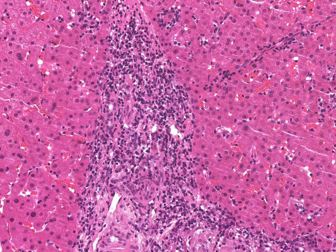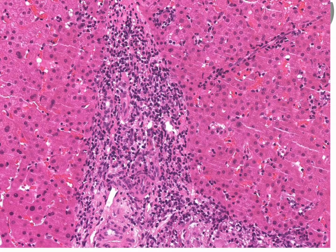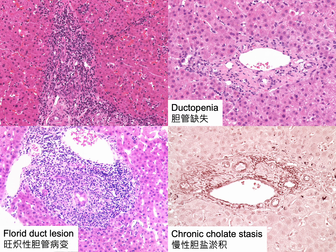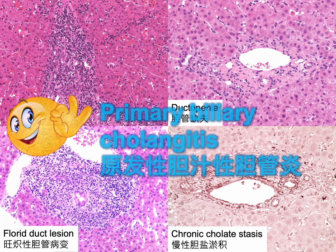In this example, the portal tract is also expanded by a lymphocyte predominant infiltrate. If we recognize a florid duct lesion, ductopenia, and chronic cholate stasis, we could secure a diagnosis of primary biliary cholangiitis in a patient with elevated alkaline phosphatase or seropositivity for AMA.